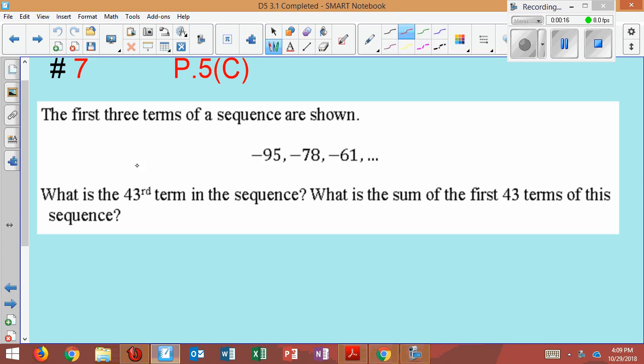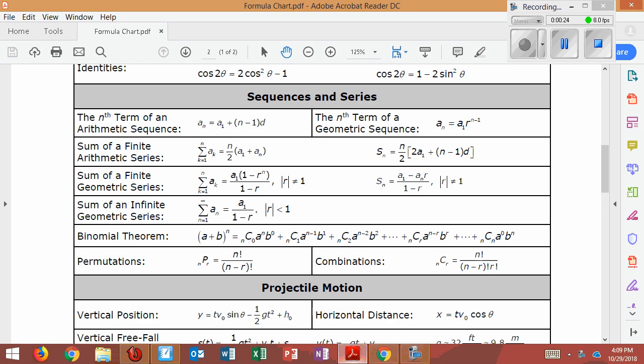So let's first start with, what is the 43rd term? This A sub 43, that's what we want to find first. To do so, we've got to determine which formula we're using. Are we using, from the sequences and series, an arithmetic formula or a geometric formula? That's what we've got to determine.